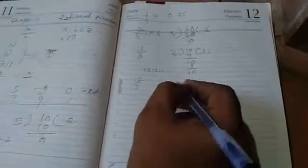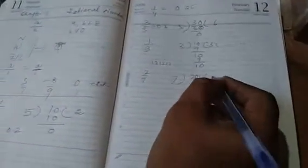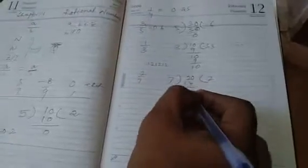Divide 2 by 7, see what happens? 7, decimal put, 7, 2, 14, you got 6, 0, 7, 8, 56, then you divide you got 4, 0, 7, 5, 35, then you got 5, 0, 7, 7, 49, then you got 1, 0, 7, 1, 7.